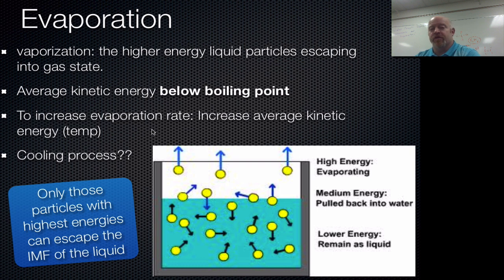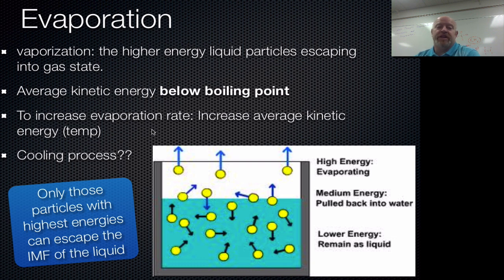If your highest energy particles evaporate first, the average energy of the remaining liquid outside your body is lower. If you're lowering your average energy, that's colder than it was before. Think of it like a relay team: if your fastest runner gets injured and is taken out, your overall team is now going to be slower. Whoever you replace them with won't be as fast as the person before, so your overall team is slower — and if you're slower, you have less energy, which is like being colder. That's how sweating works.